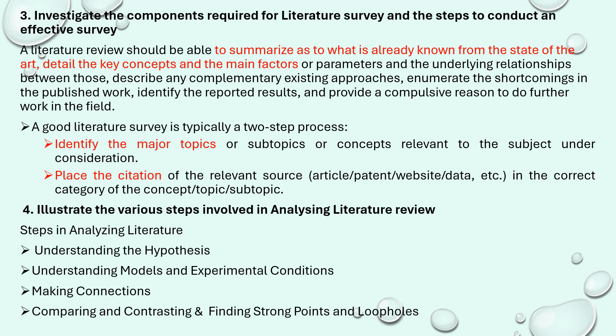The steps to conduct an effective literature survey are: first, identification of the topic — identifying the problem statement relevant to the particular subject and stream, whether it is Electronics and Communication, Electrical and Electronics, Computer Science Engineering, or Artificial Intelligence — and identifying the major concepts and topics. The second step is placing citations: once the problem statement is ready and you go for the literature review, a citation must be provided for each and every review that you refer.